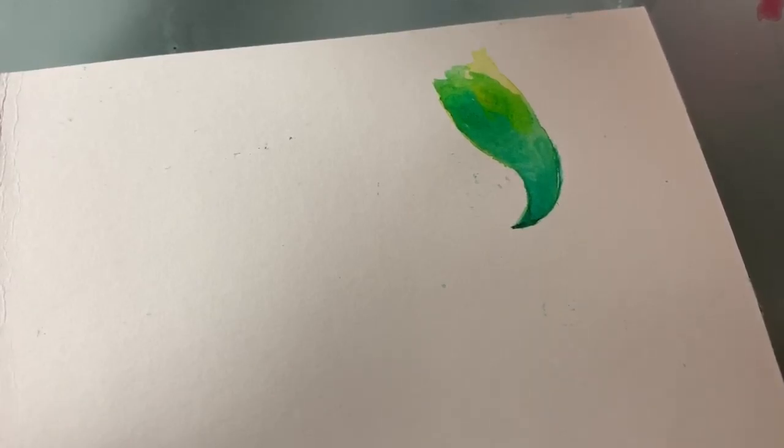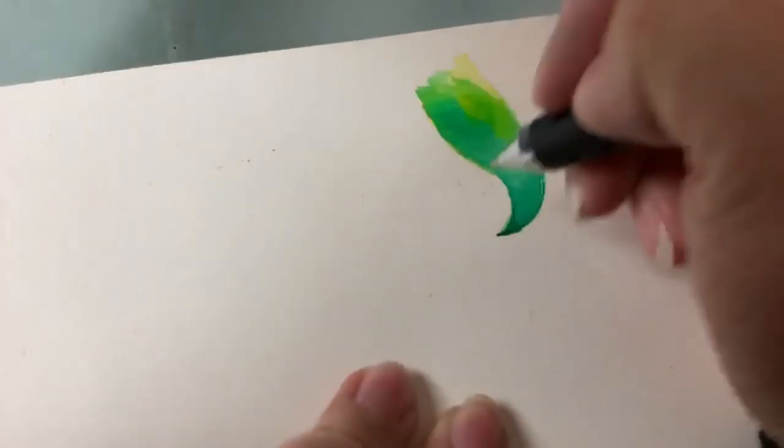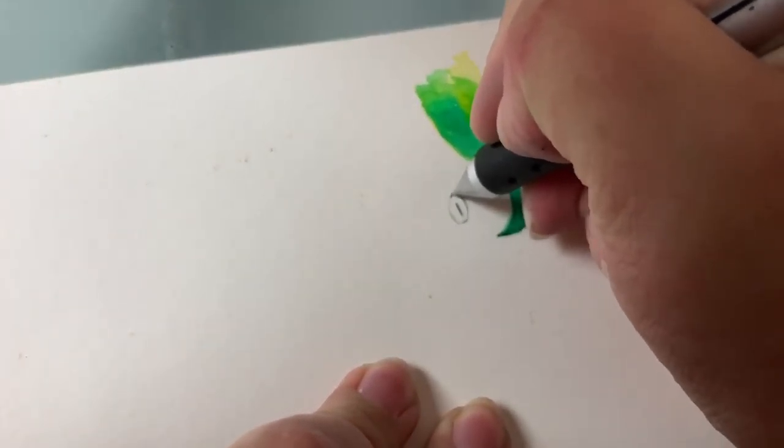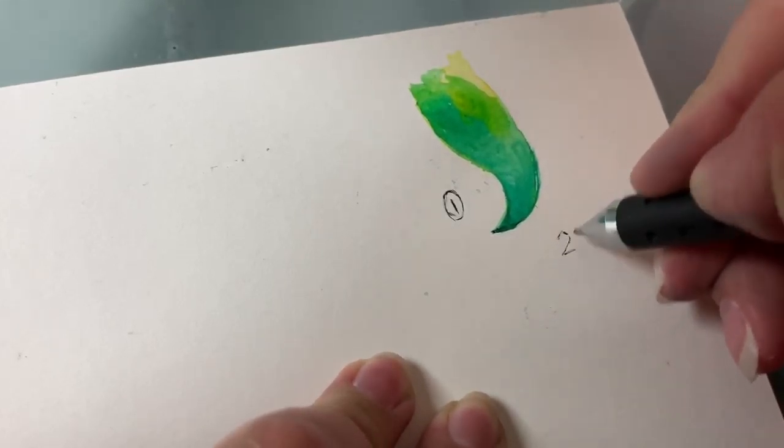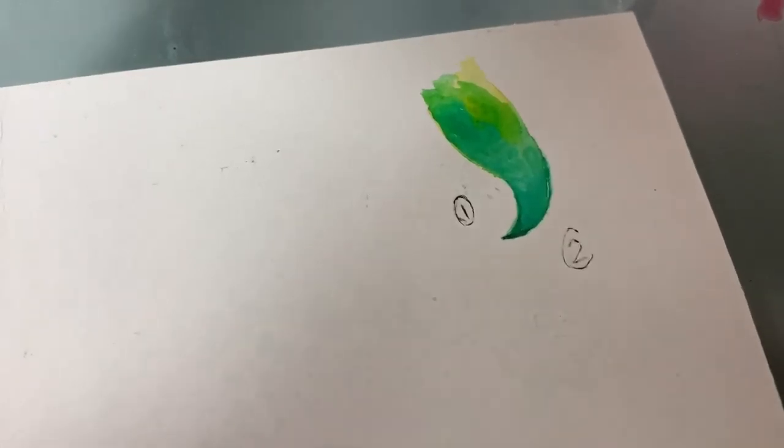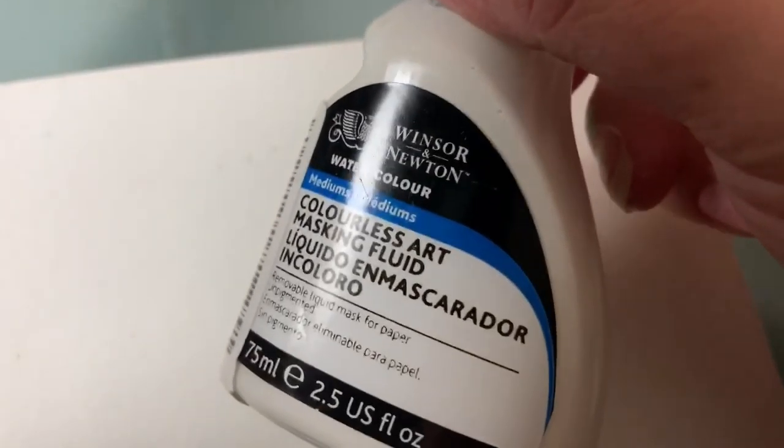So this is number one option: white on top of existing paint. Option number two is to mask off your mermaid tail. There are some rules with masking that I want to go over. Don't sniff it, I did that earlier. Don't sniff your paint.